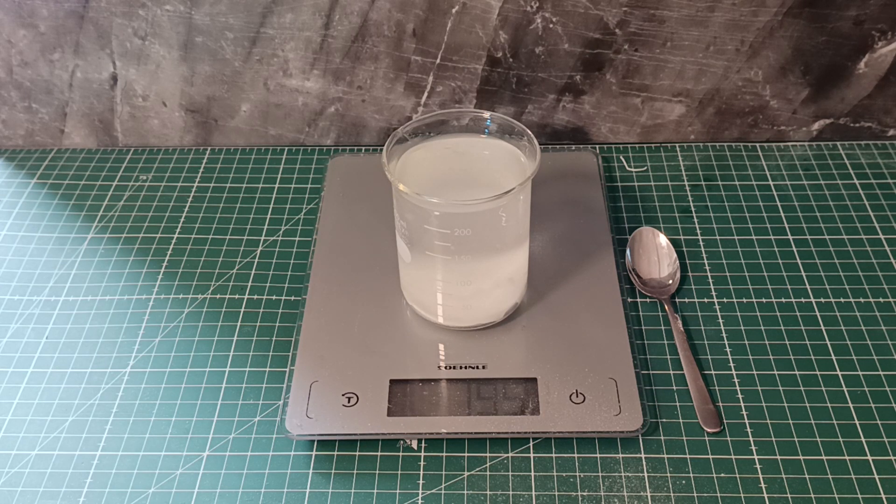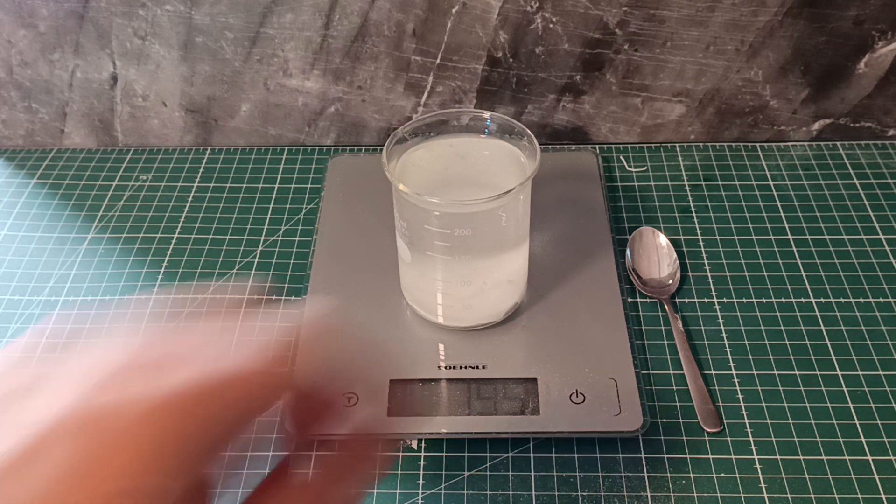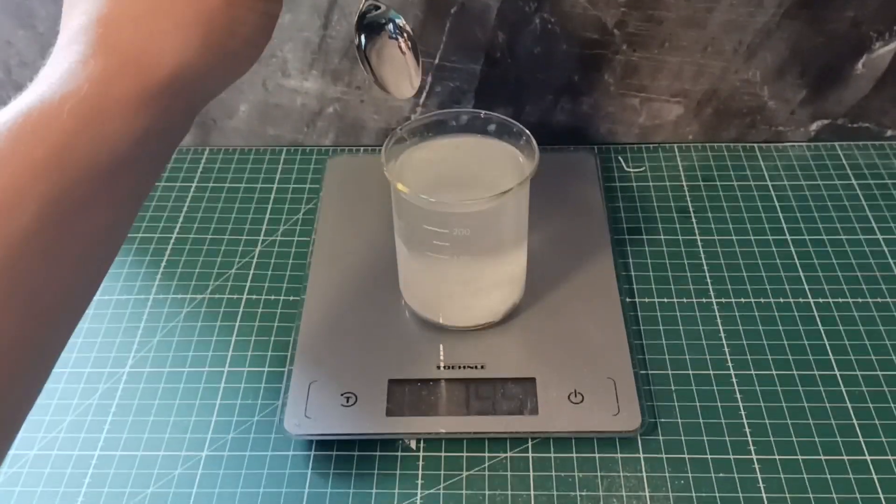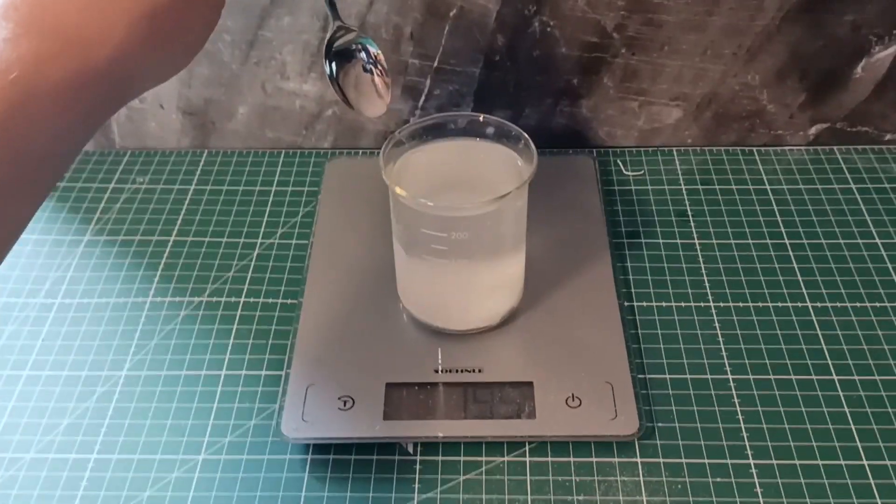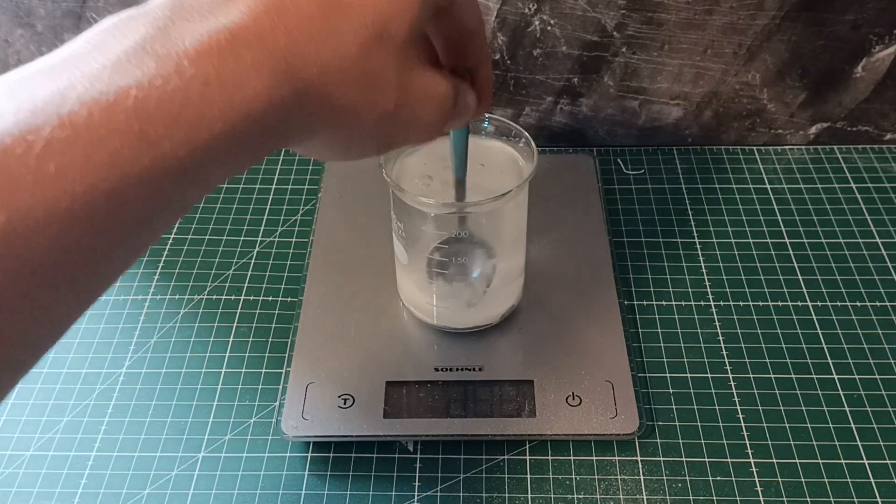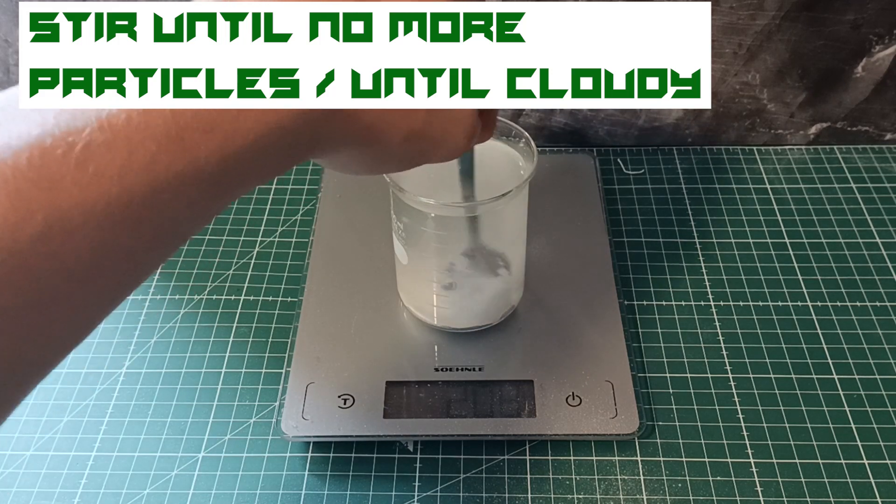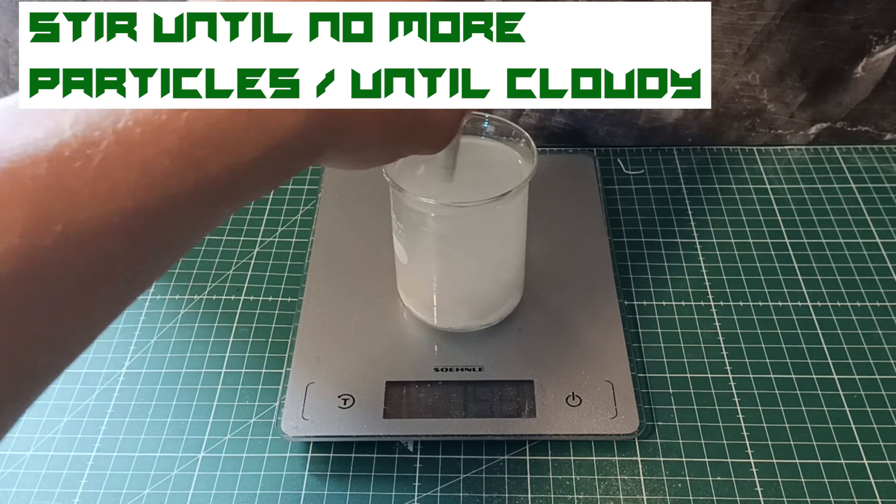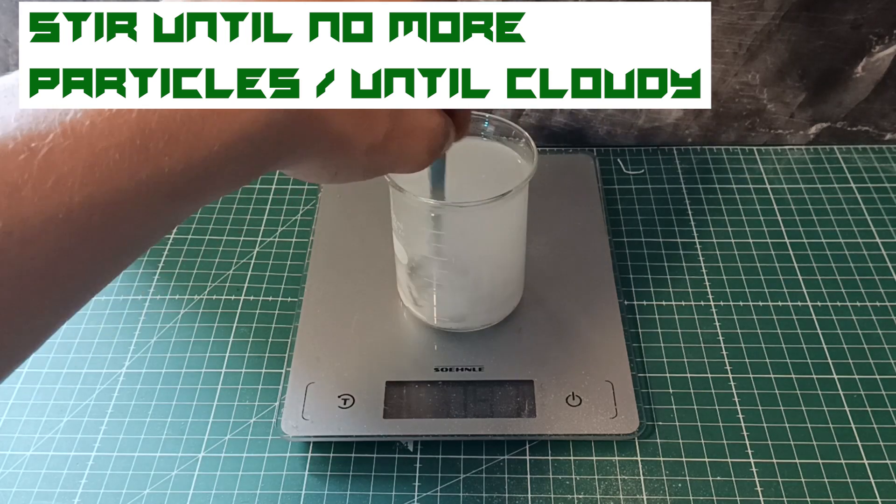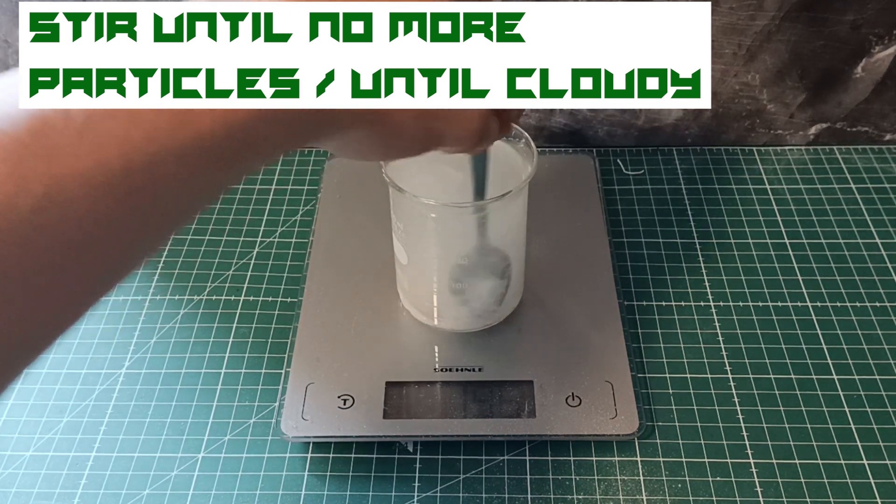Alright, now we got this mixture. The beaker is very full. Now we can take the spoon and stir the mixture around. There may be bubbles coming from the beaker, but just ignore that. Just keep stirring.